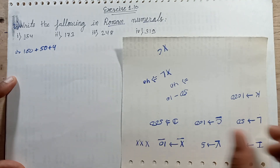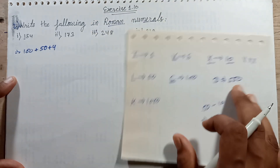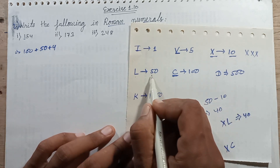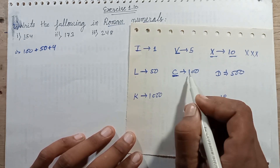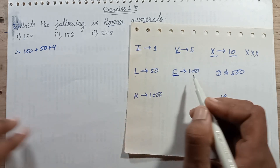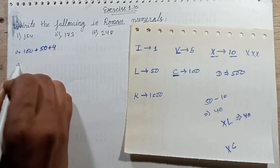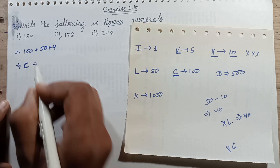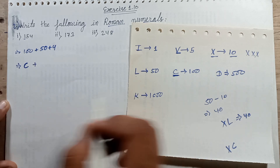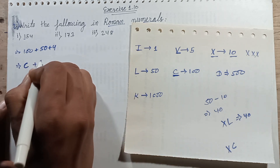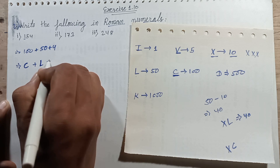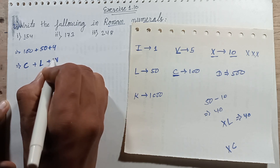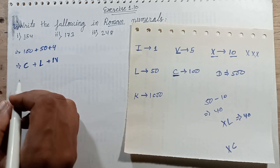Remember some Roman numeral symbols. L represents 50. C represents 100. So 100 plus C capital C, plus 50 — 50 is represented by L. L represents 50, plus 4. Since 5 subtract 1 equals 4.